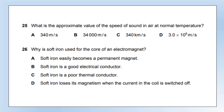What is the approximate speed of sound in air? It's about 330–340 m/s — that's something you just have to know. Option D is the speed of light in a vacuum, which is different.